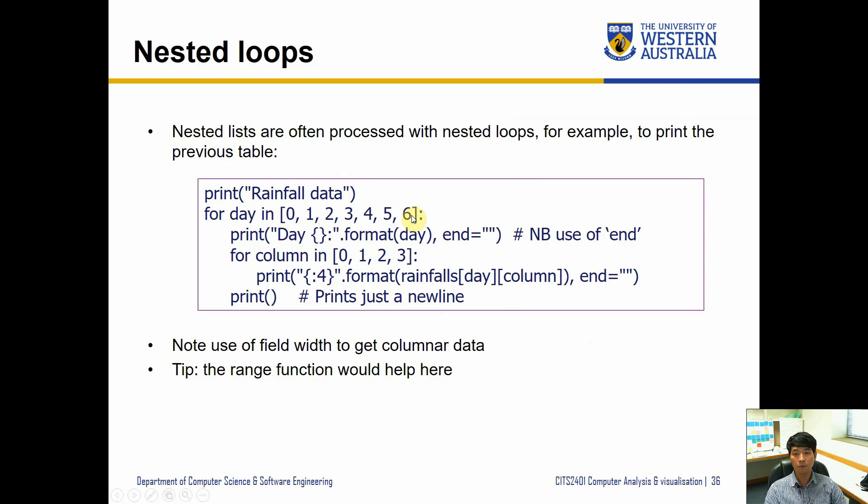So here the range function would help instead of using the list of zero to six here. If we want to rewrite this for loop, the outside for loop is going to be for day in range seven, and we know that we have four readings per day, so the inside for loop can be for column in range four. You can give that a go as well.